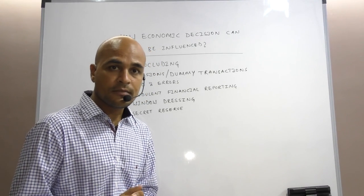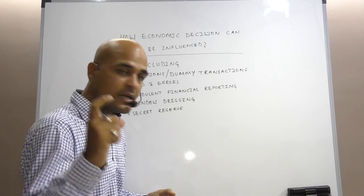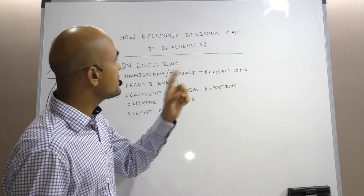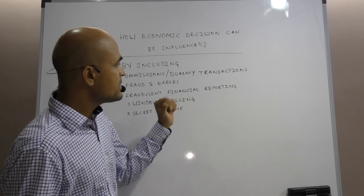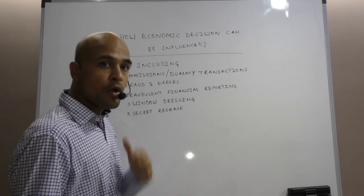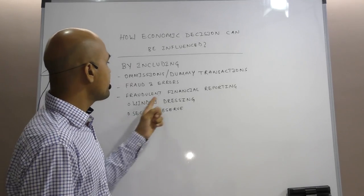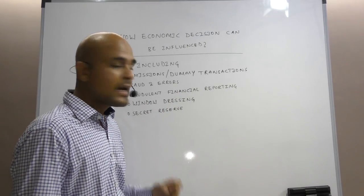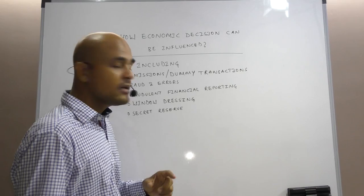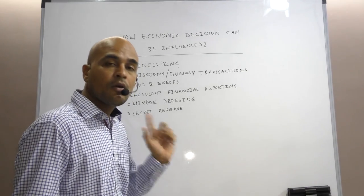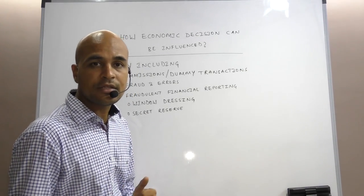So to cut short, in a nutshell, economic decisions can be influenced by including omissions or dummy transactions, or by resorting to fraud and error, or by fraudulent financial reporting. I mean to say by creating secret reserve or window dressing the financial statements.